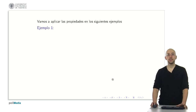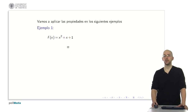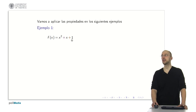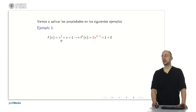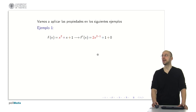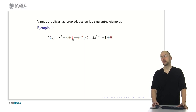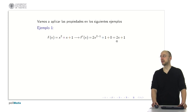Let's see some examples. We will start with a very simple polynomial of the form x squared plus x plus 1. There are three elements: x squared, x, and the constant 1. The derivative involves differentiating each term. For x squared, we take 2, pass it forward, and subtract 1 from the exponent. The derivative of x is 1, and the derivative of the constant 1 is 0. Simplifying, the result is 2x plus 1.